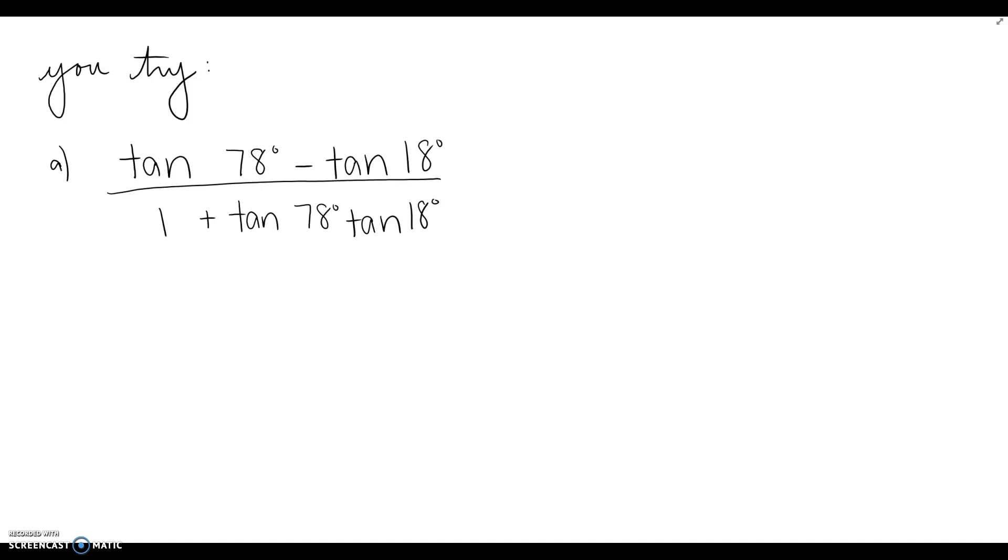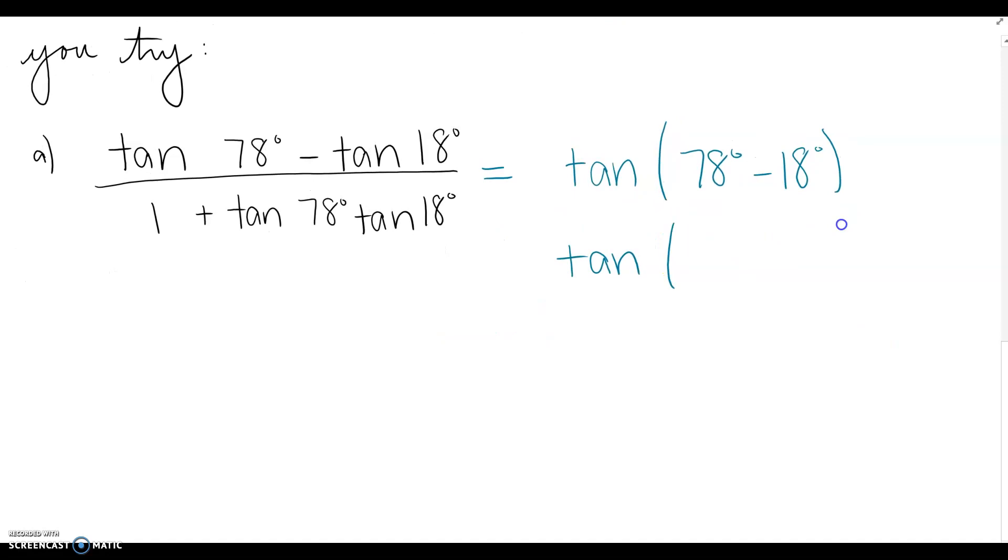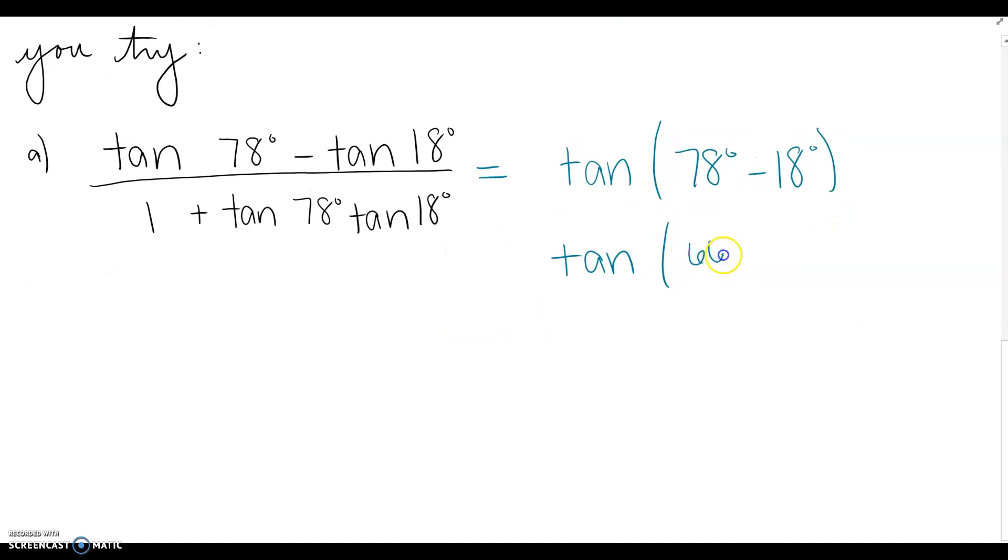For the first step, hopefully you looked at your trig identities and realized that we can rewrite this as tangent of 78 degrees minus 18 degrees. Then, this is where the problem is a little bit different. We can actually subtract these. What's 78 minus 18? Hopefully you got 60.